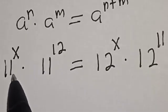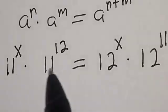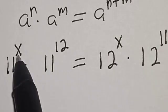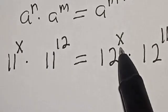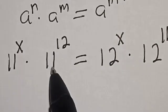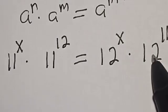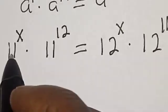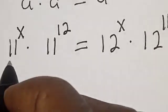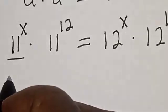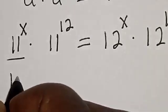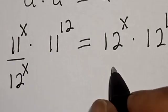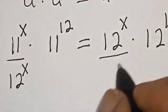We can divide this by 12 raised to power s, because we have 11 raised to power s on the left and 12 raised to power s on the right, and we also have 11 raised to power 12 and 12 raised to power 11. Now let's divide both sides by 12 raised to power s.